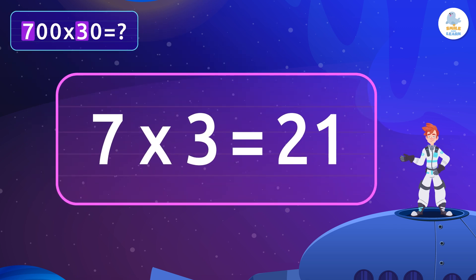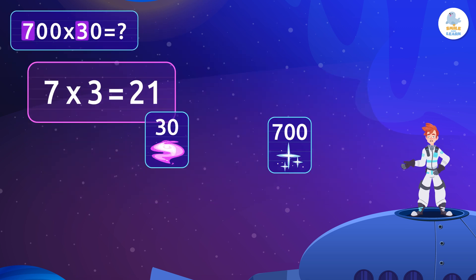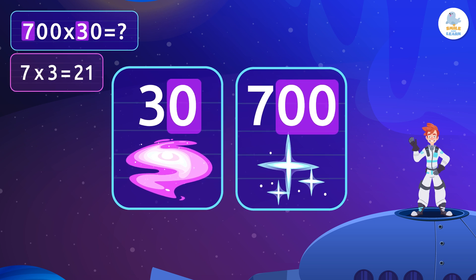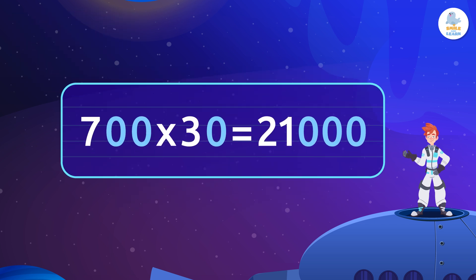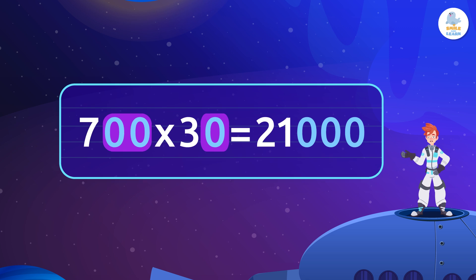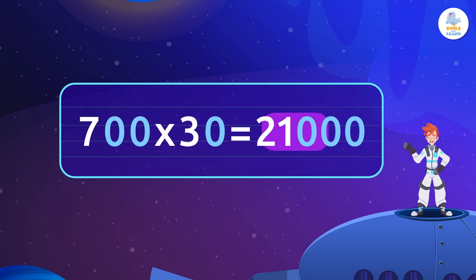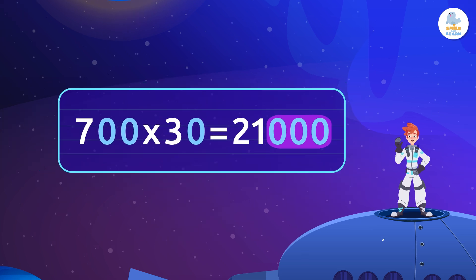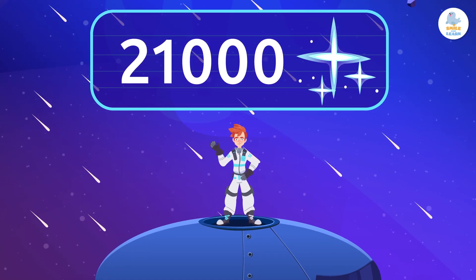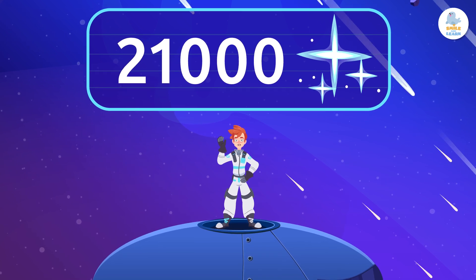Of course, 21! Next we count the zeros from the original numbers we want to multiply. 700 has two zeros and 30 has one, so there are three in total. Lastly, we add these three zeros after the number 21 to get the final answer: 21,000. There are 21,000 stars — will I have time to visit them all?